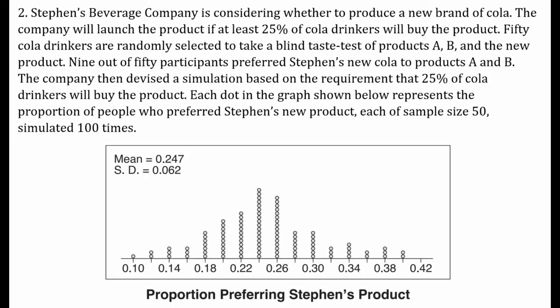Stevens Beverage Company is considering whether to produce a new brand of cola. The company will launch the product if at least 25% of drinkers buy the product. 50 cola drinkers were randomly selected for a blind taste test, and 9 out of 50 preferred the new cola — that's a sample proportion of 0.18.